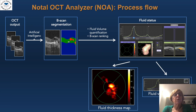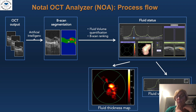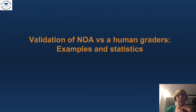This is the process flow of the NOTAL OCT analyzer. The OCT output, the BISCANs, are analyzed by artificial intelligence to provide segmentation, fluid volume quantification, and BISCAN ranking, as you can see on this fluid status map, which includes both the fluid thickness map and the fluid volume graph.